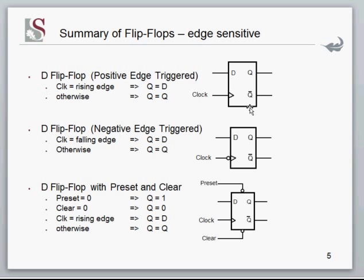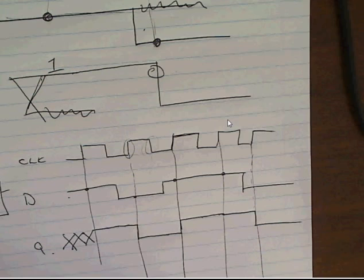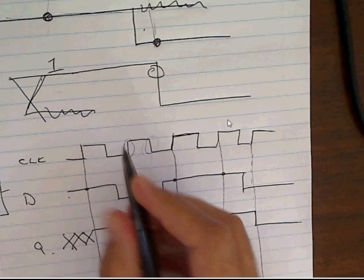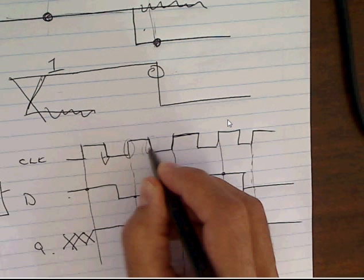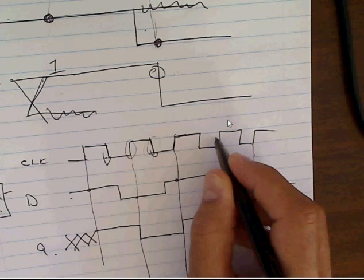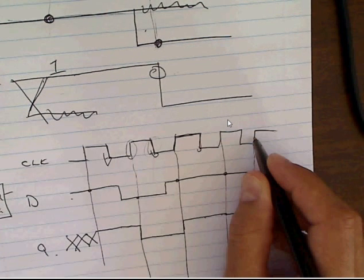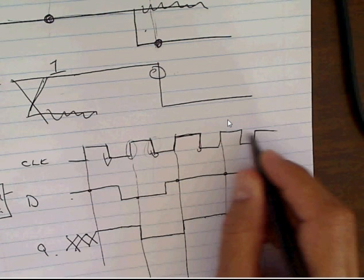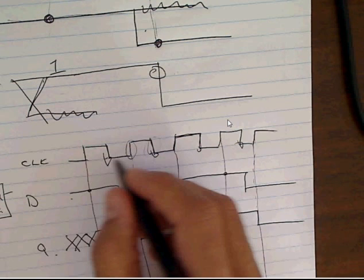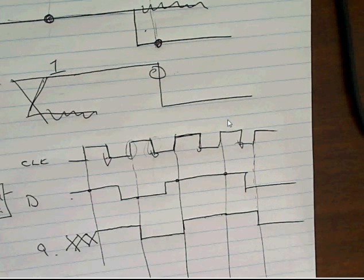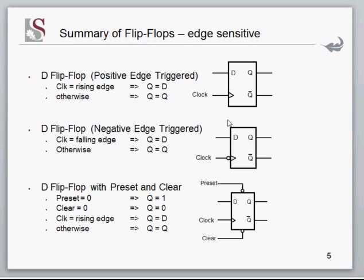For the negative edge triggered flip-flop, it will not trigger on positive edges — it triggers on the falling edges instead, sampling D at each of those falling edge points.